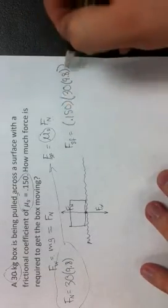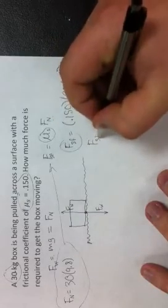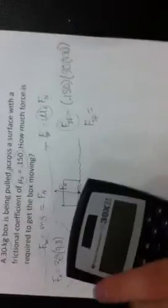Now all we have to do is multiply these three numbers together, and it'll give us the force caused by static friction. On our calculator, we'll type that in real quick.